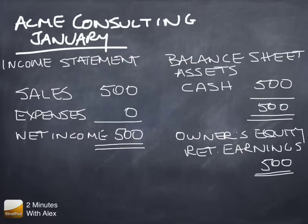The balance sheet shows cash of $500, total assets of $500, and the owner's equity — the retained earnings — is equal to the total of all the income and losses for the entire history of the company, which is less than a month. The key point here is that in a perfect world, net income simply becomes cash.